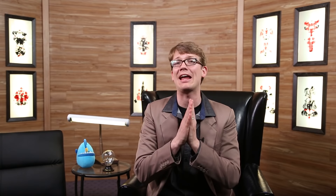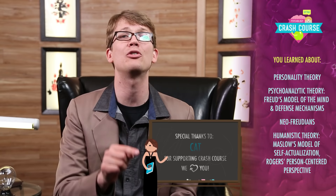Psychoanalytic and humanistic theories of personality were, and are, incredibly influential — even if one was a little sordid and the other a little sunshine and rainbows. But they didn't always lend themselves to clear measurement, and as empirical standards began to take hold in the mid-twentieth century, this became a major concern. Tune in next week when we explore some of the newer ways of looking at personality and how we started measuring it. Today you learned about personality theory and two of its early schools of thought: the psychoanalytic theory, including Freud's three-part model of the mind and defense mechanisms, along with the Neo-Freudians; and the humanistic theory, including Maslow's model of self-actualization and Rogers' person-centered perspective.